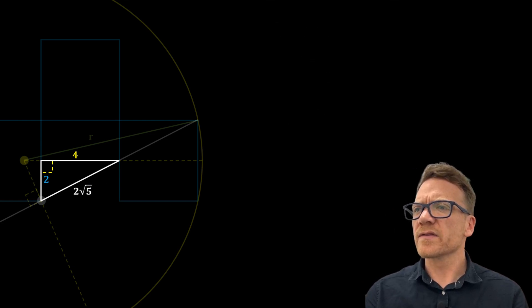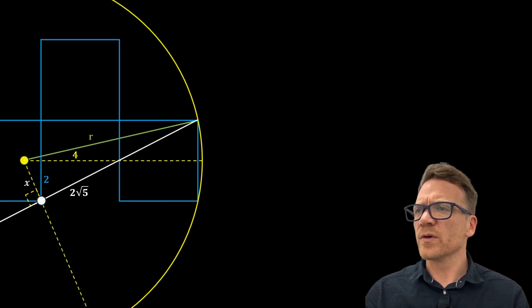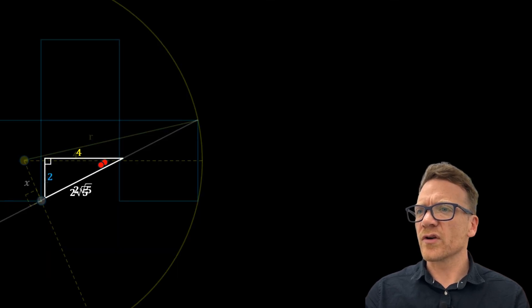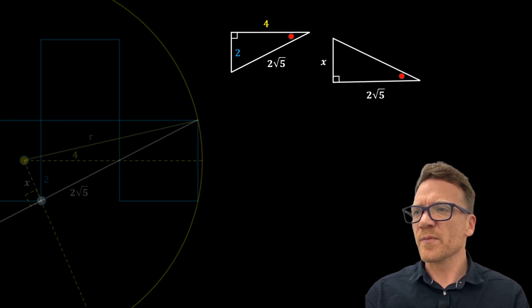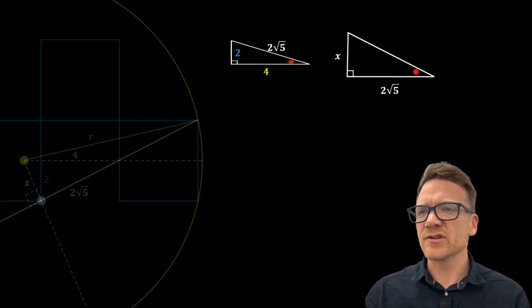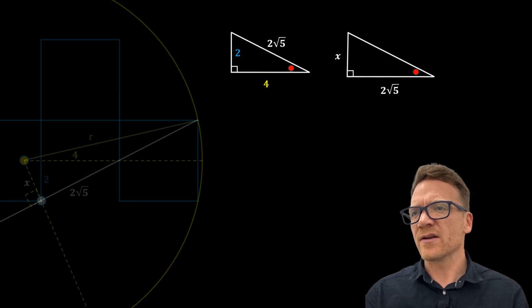Let's label this length x. And we want to now try to find out this value. To do this, we can first consider this angle, which we're going to label with the red dot. We can construct this right triangle. And we can also construct this right triangle. Now both of these triangles have a right angle and share a common red angle. This means that the remaining angle must be the same, and they are similar triangles. And we can go ahead and label this last angle with a yellow dot.